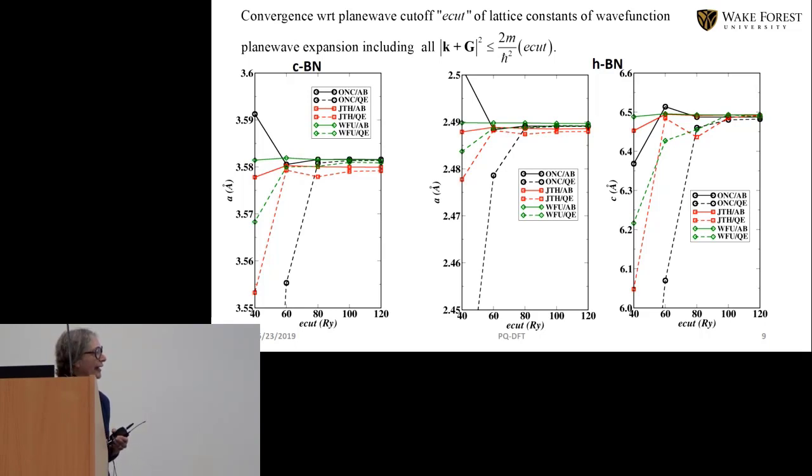Now in the case of the hexagonal lattice, the in-plane lattice constant has the same sort of deviation as the cubic lattice constant, but the hexagonal c-axis of course is much softer. In reality there's probably a little bit of van der Waals forces going on and so there's a lot of deviation there for the c-axis.